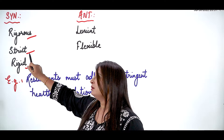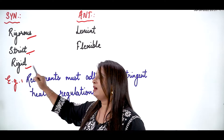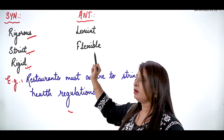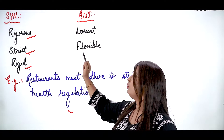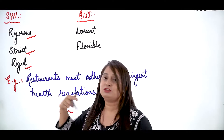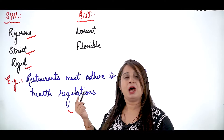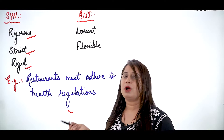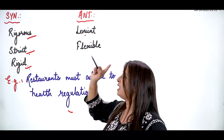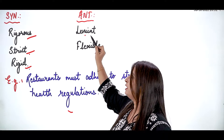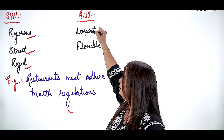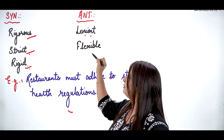Synonyms are rigorous, strict, and rigid. Now if you have to write the antonym, it will be 'flexible,' and the opposite of strict will be 'lenient.' So the antonym of stringent can be lenient.